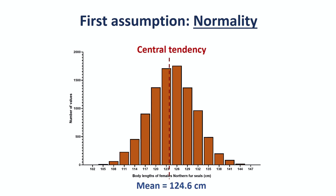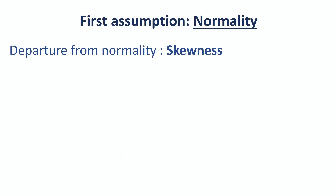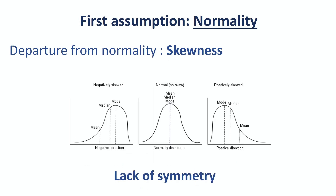It is really important to make sure that our data are behaving normally, as if they depart from normality the mean is no longer a faithful summary. There are two main departures from normality. The first one is skewness, which is basically a lack of symmetry. Data can be positively skewed with the tail on the right, or negatively skewed with the tail on the left. This is easily spotted if we take the time to explore our data, and it is easy to see how misleading the mean would be in summarizing skewed data.